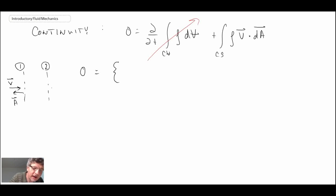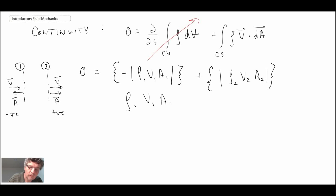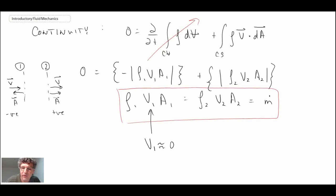And then for two, on exit, the velocity vector was in that direction and our area vector would be there. So the dot product here is negative and the dot product here is positive. Those are equal to the mass flow rate. That's what we get out of continuity. One of the assumptions we made was that V1 was approximately equal to zero. But be careful, that doesn't mean mass flux is zero. All that means is that kinetic energy one is approximately equal to zero. That can sometimes be a point of confusion for students.